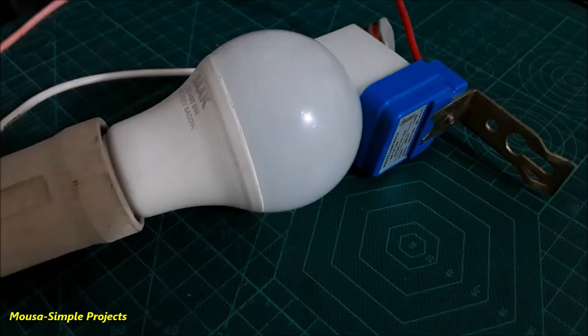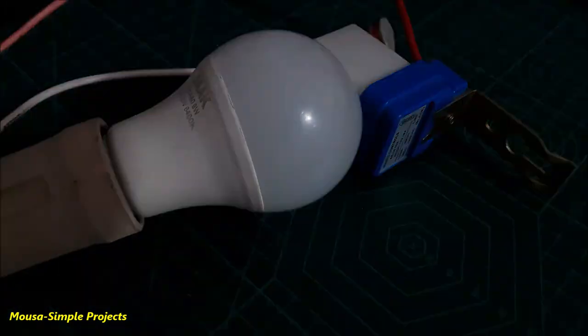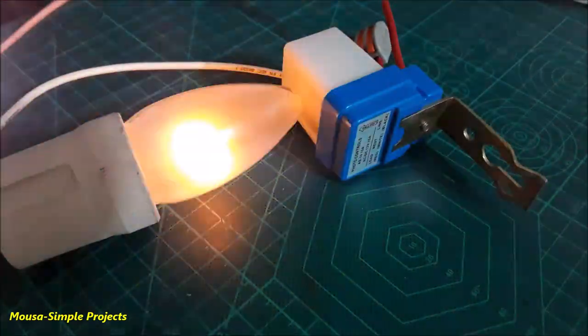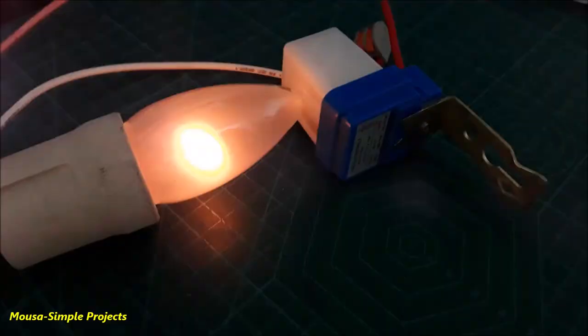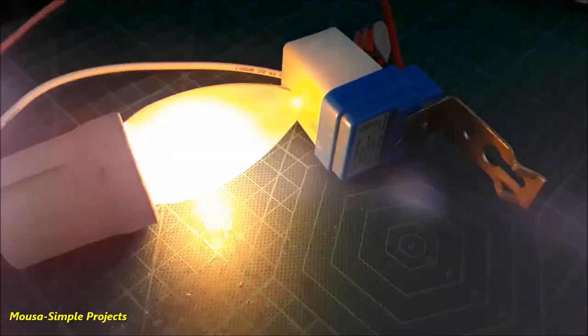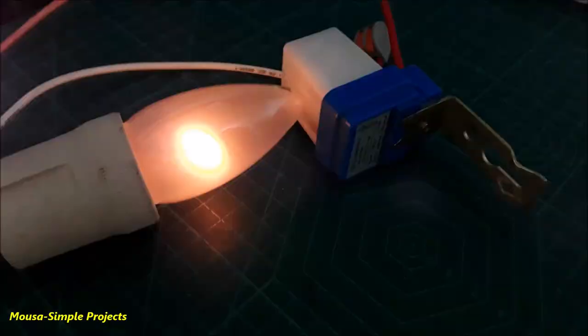The reason for this is that at night, when the lamp switches on, the photo cell is exposed to the lamp's light. So the photo cell thinks it's daytime and switches off the lamp. This process repeats again and again, so the lamp keeps flashing.